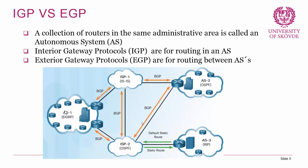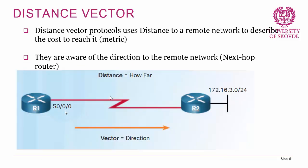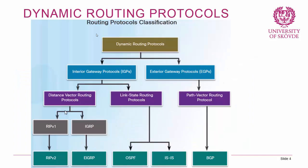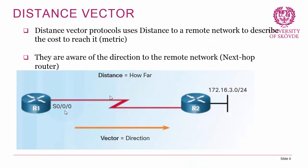Looking at the different types of routing protocols, let's begin with distance vector routing. Distance vector routing includes RIP (Routing Information Protocol), IGRP — which is deprecated — and now EIGRP. Those are all distance vector protocols. What signifies a distance vector protocol is that it uses distance to a remote network to describe the cost to reach it. Whenever we talk routing and routes, we talk about a cost to follow a specific route, and that cost is the metric of the route. When a routing decision is made, the router will choose the route with the lowest metric.